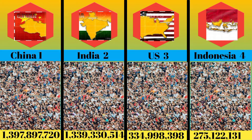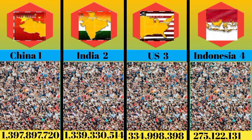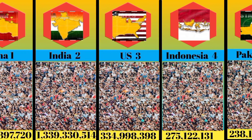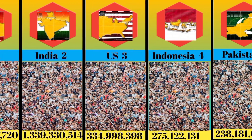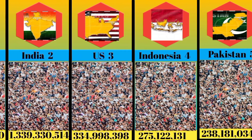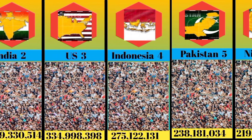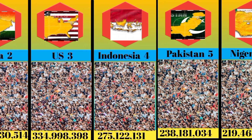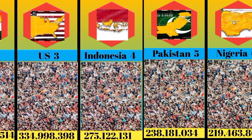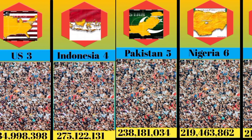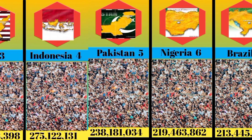China has the most population in the world, whereas India is the second largest country in terms of population. United States is third, and Indonesia is in fourth place.